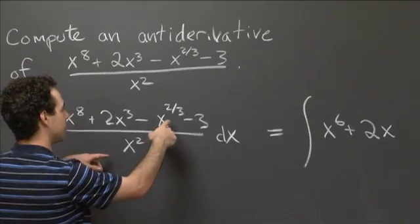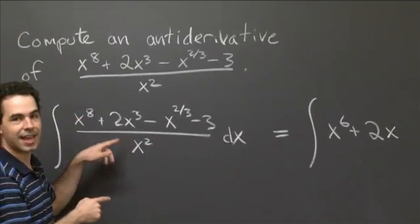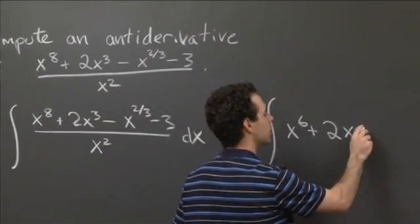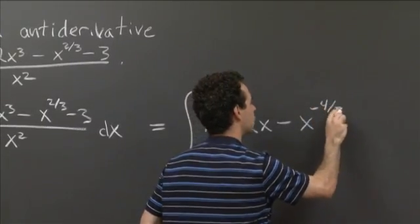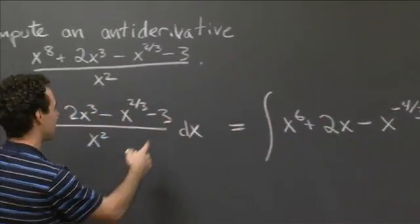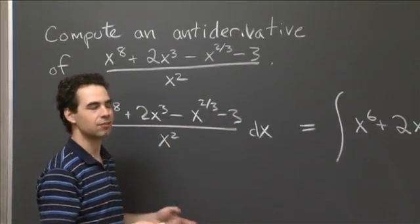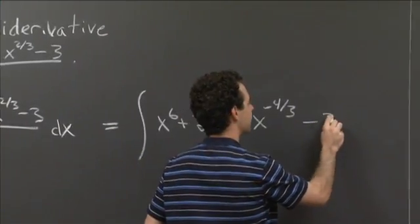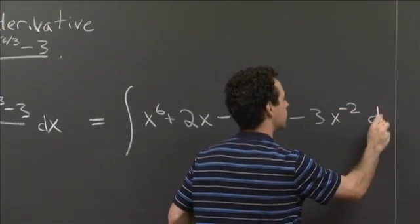Now, x to the 2 thirds over x squared, so that's x to the 2 thirds minus 2, which is x to the minus 4 thirds, and minus 3 over x squared. We could write that as minus 3 over x squared, or maybe it's a little more convenient to write it as minus 3x to the minus 2 dx.